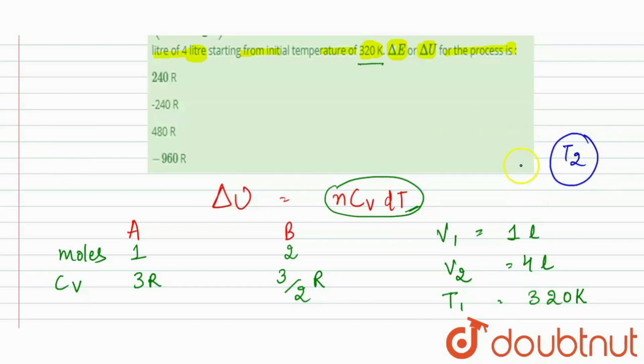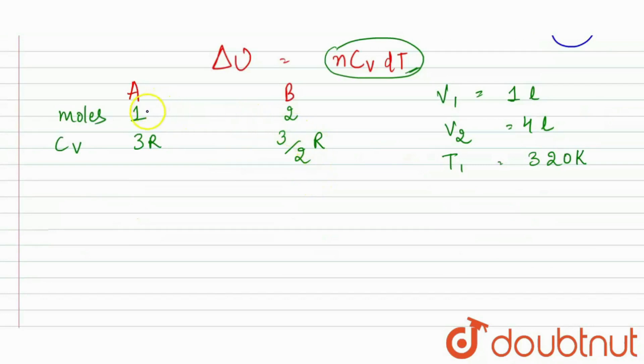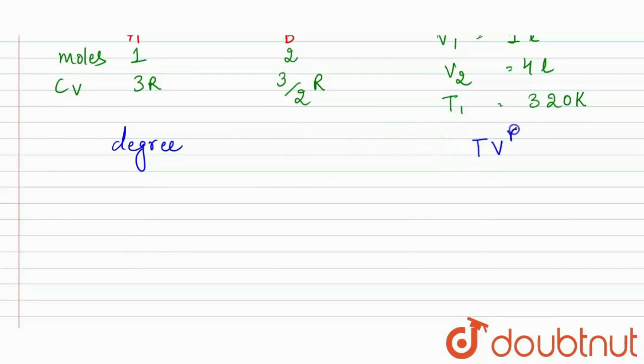According to this formula, we need dT, that is our change in temperature. So we require the value of T2. First we will find the value of T2. We are given with the moles, Cv, V1, V2. With the help of degree of freedom, because it is an adiabatic expansion, we need Tv gamma minus 1 is equal to constant. For that we need the gamma value, and gamma value can be found out from the degree of freedom.